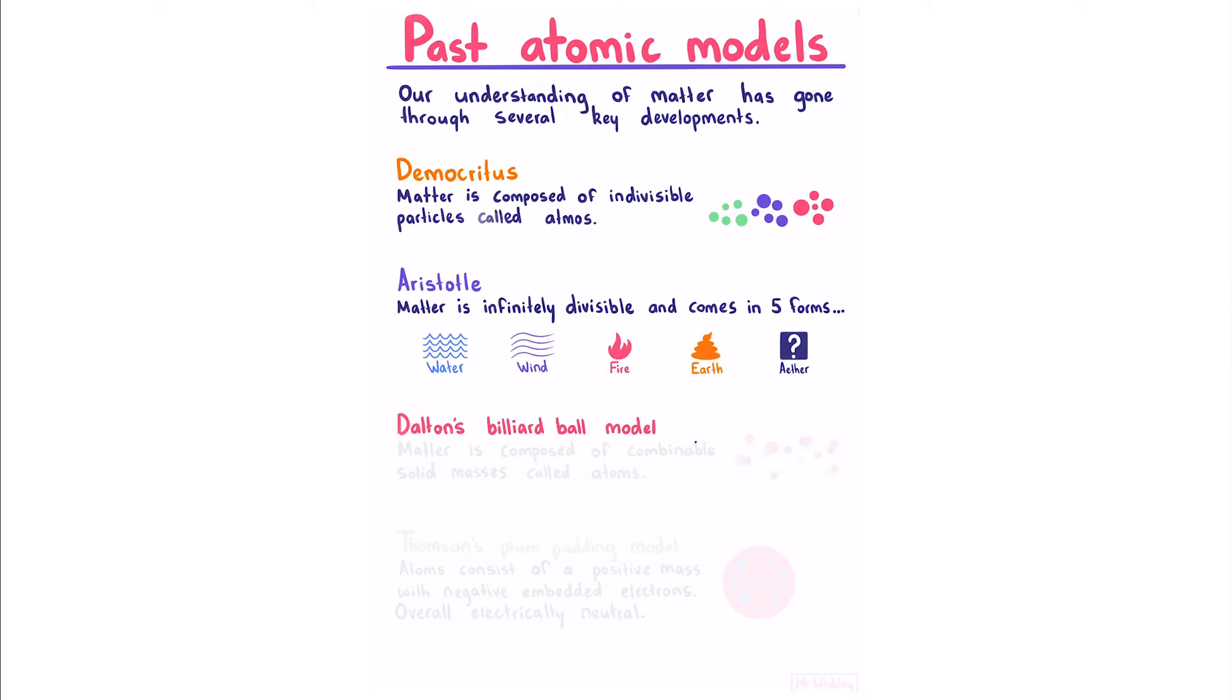Dalton's billiard ball model said that matter is composed of combinable solid masses called atoms, which starts to give us the idea of molecules. Thomson's plum pudding model theorized that atoms consist of a positive mass with negative embedded electrons. The positive mass and negative embedded electrons add to an equal and opposite charge such that the atom is overall electrically neutral.